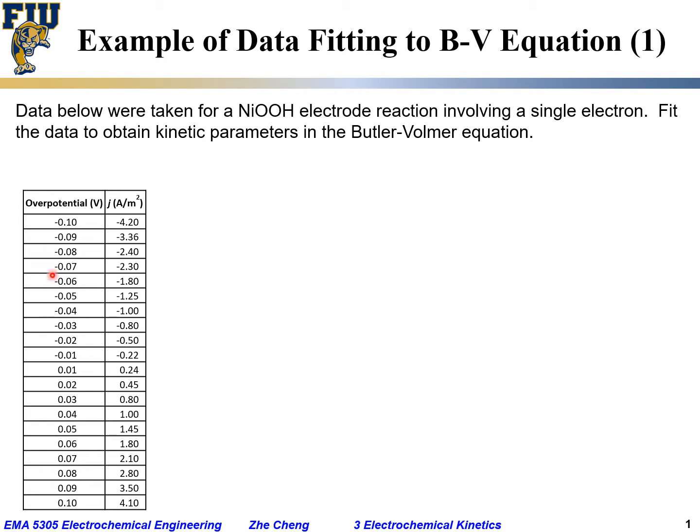Let's look at the data below. The data below were taken for a nickel oxide hydroxide electrode reaction involving a single electron. It doesn't matter what exactly the redox reaction is, but we know it involves a single electron, or N is one in this electrochemical half cell reaction.